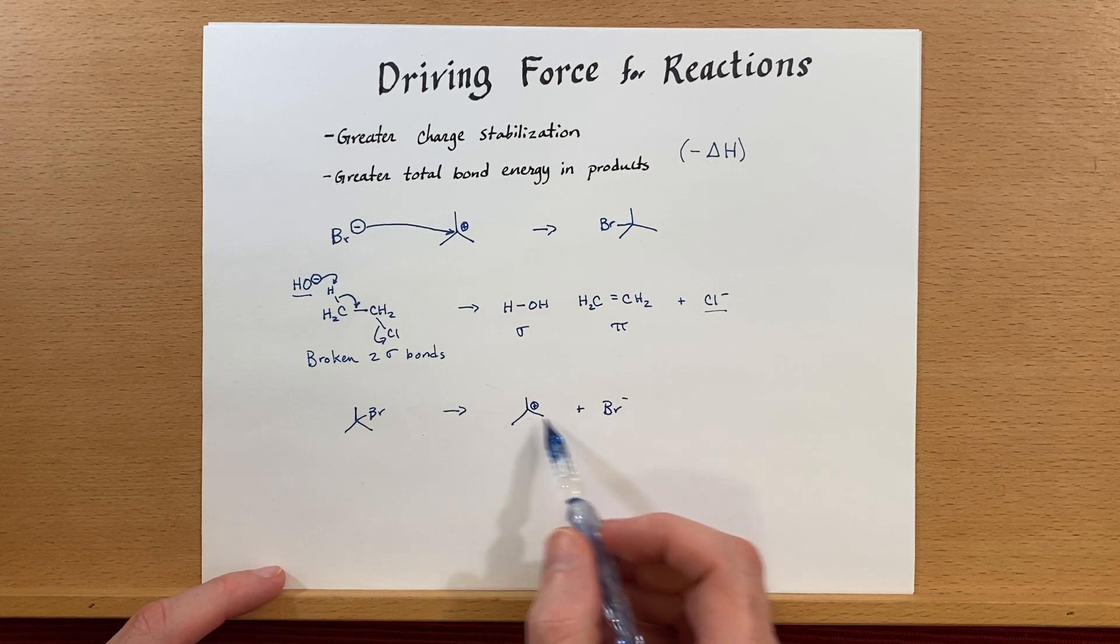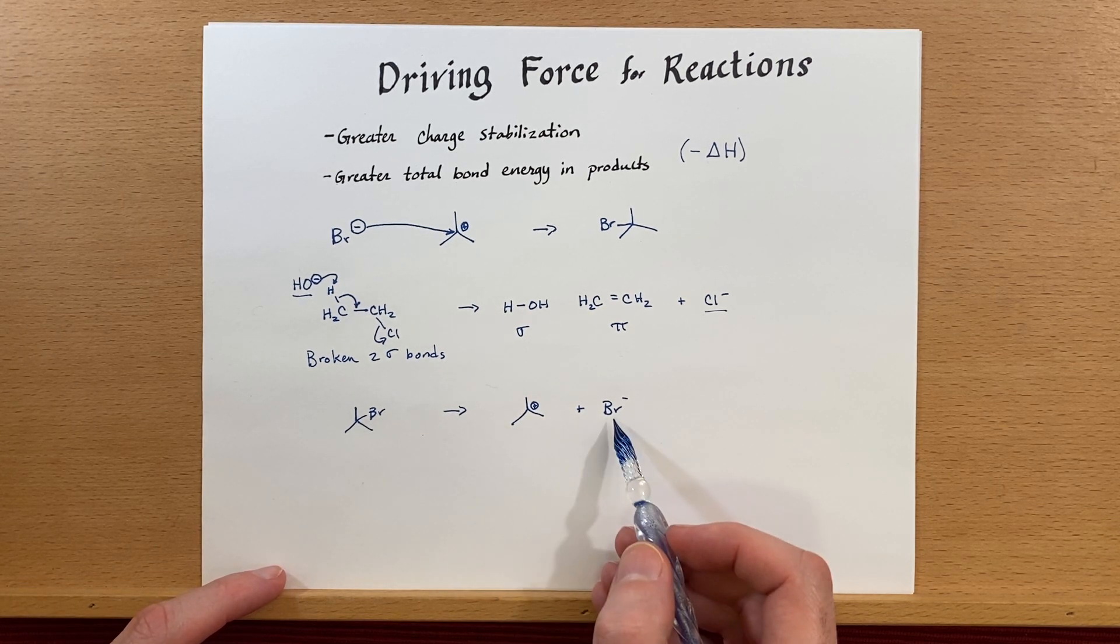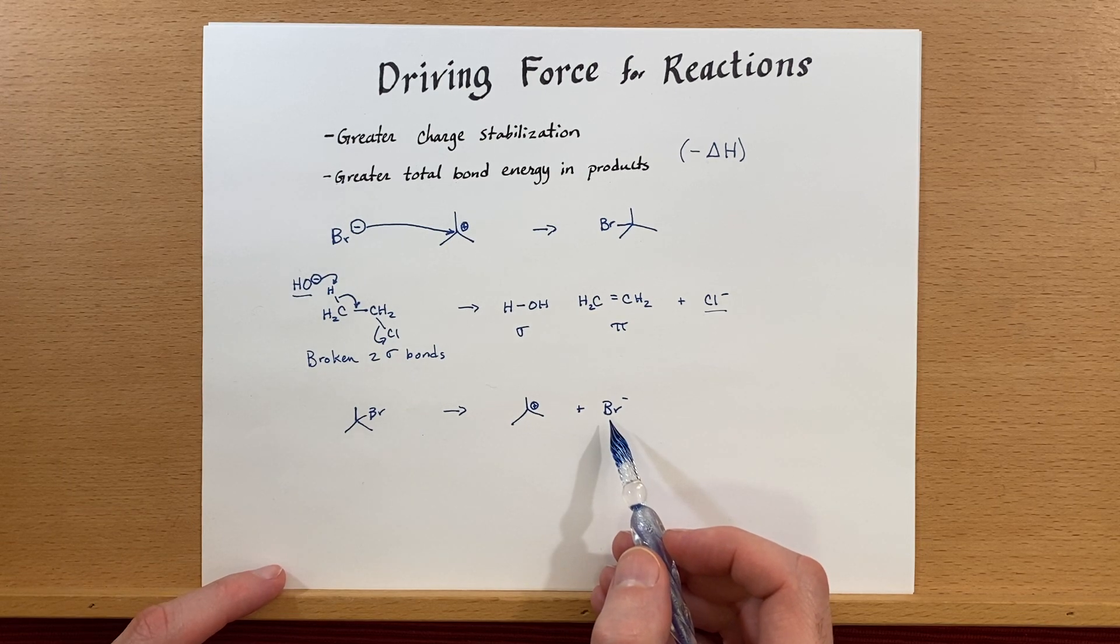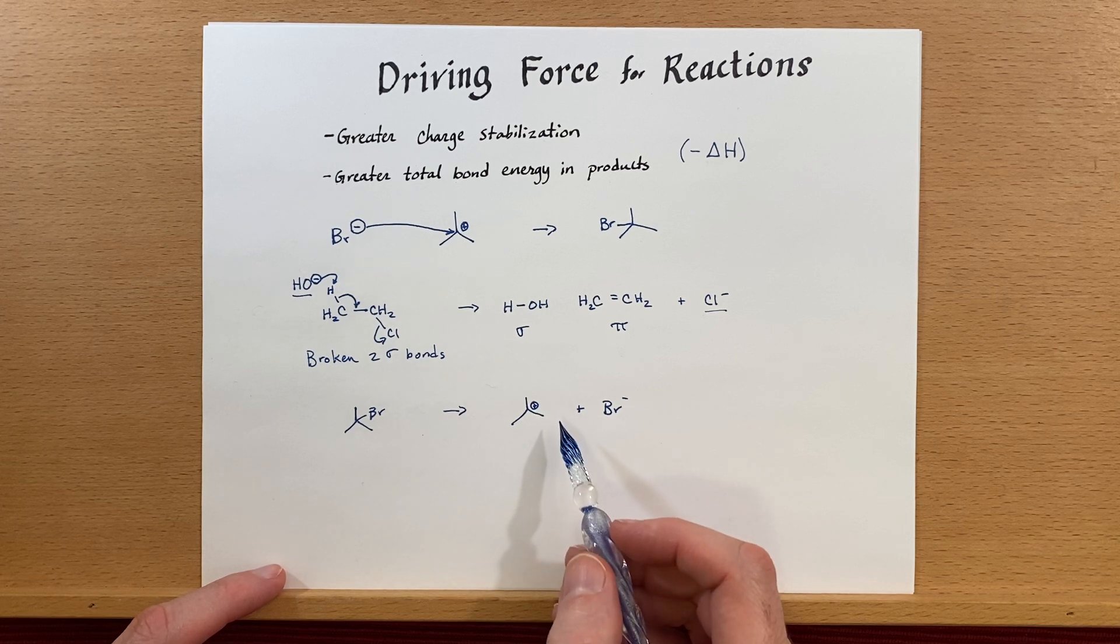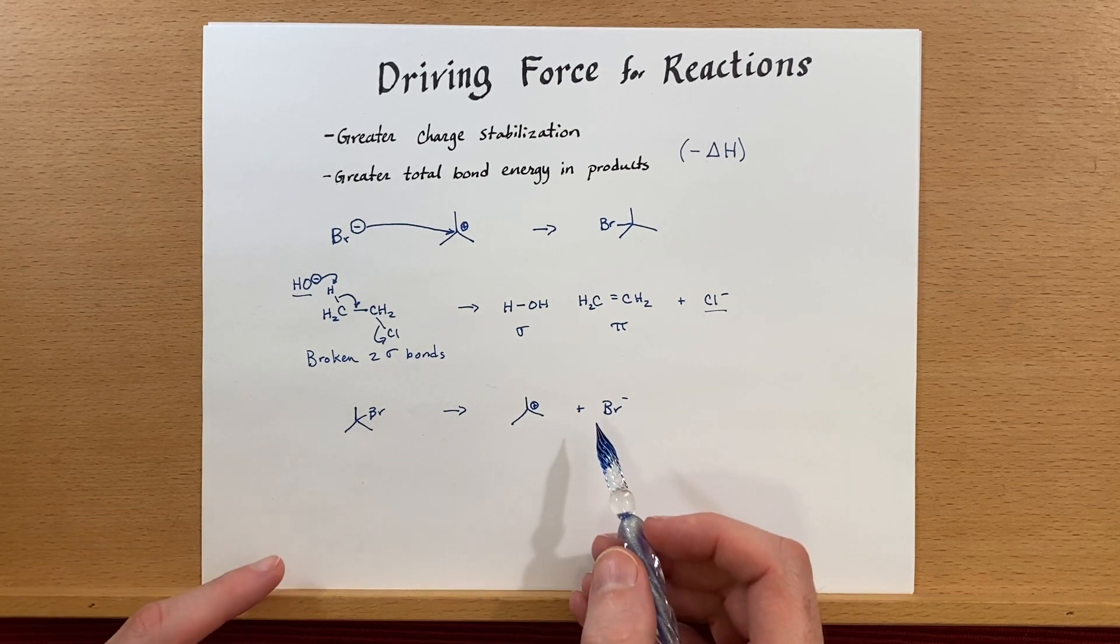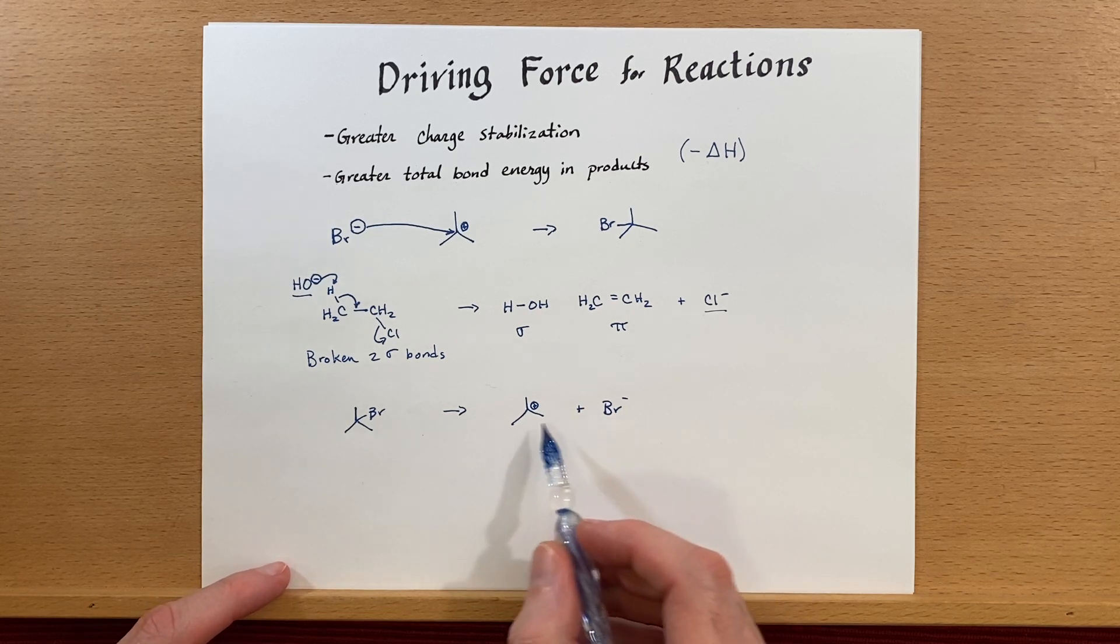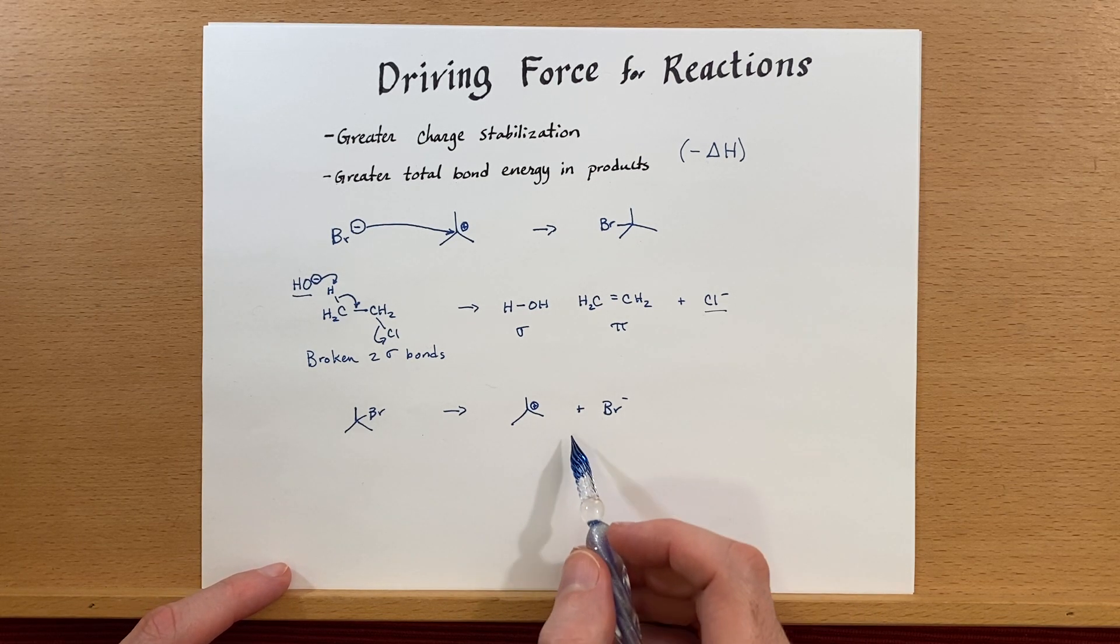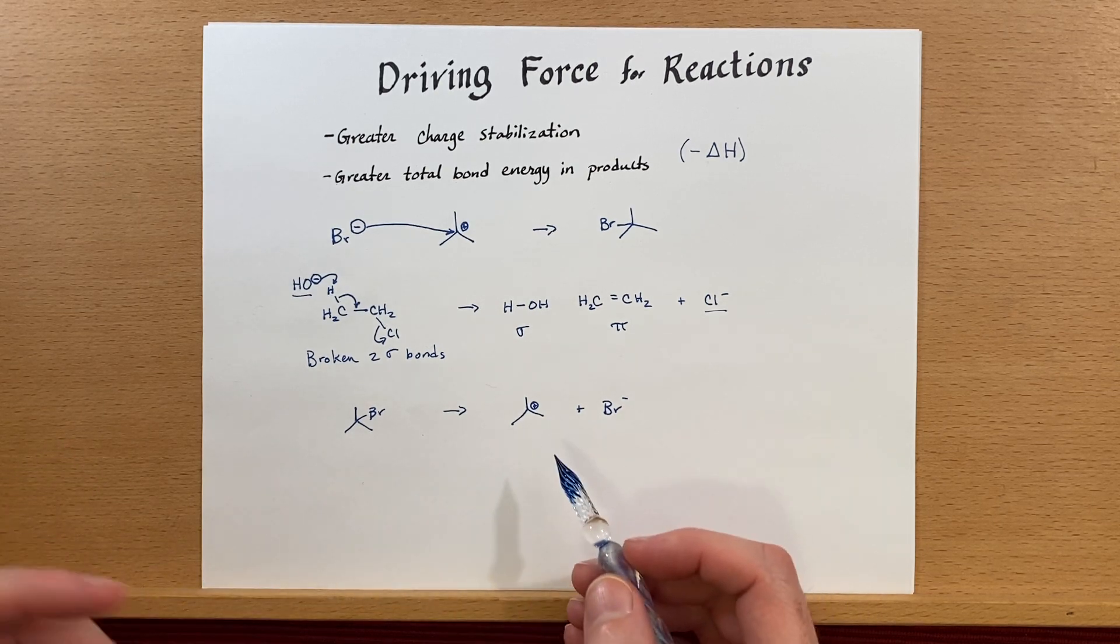There's also a slight contribution to entropy because we've made two objects here rather than one. And of course, that is detrimental in this case. But in general, delta H seems to be a bigger effect than entropy does. But the main point here being that there are other things at play.